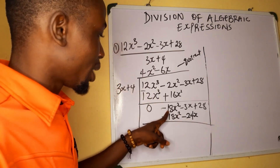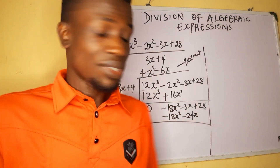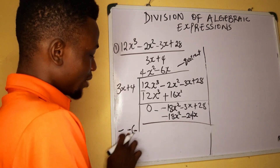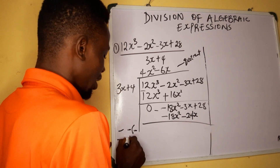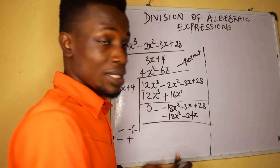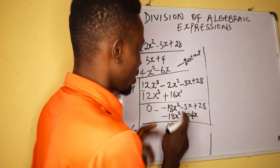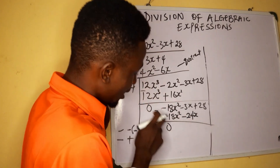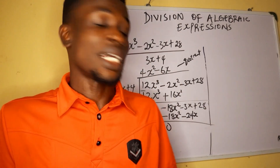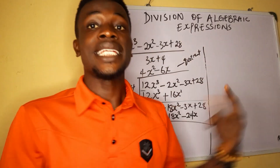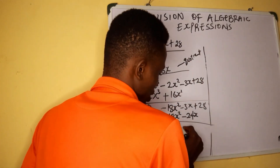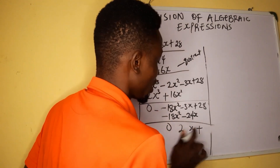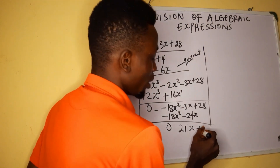Now place a negative sign here to eliminate: negative times negative gives positive, so negative 18x squared plus positive 18x squared is zero. Then negative 3x minus negative 24x: negative times negative turns positive, giving plus 24x. So negative 3x plus 24x gives us positive 21x. Bring down the plus 28.